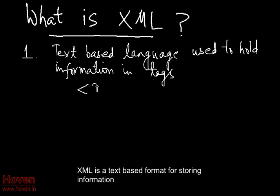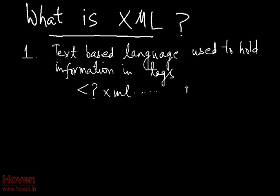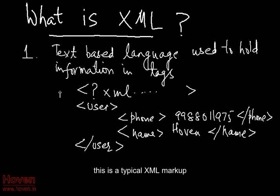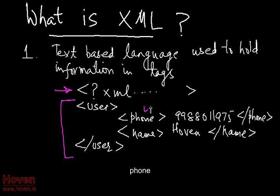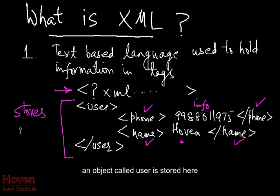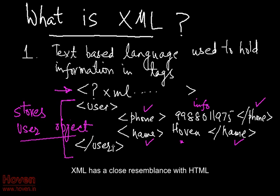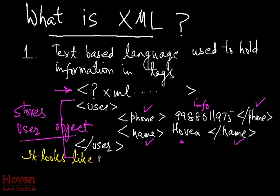XML is a text-based format for storing information. This is a typical XML markup. This is a mandatory line, and this is the actual data — for example, phone and name. An object called user is stored here. XML has a close resemblance with HTML. In fact, HTML is a type of XML.